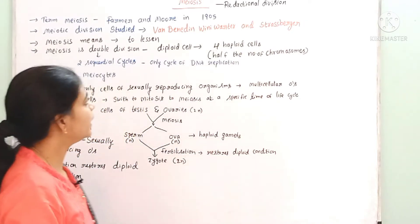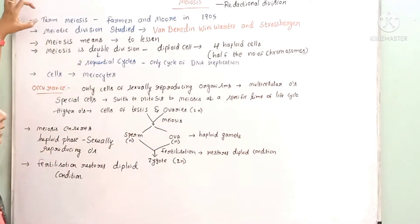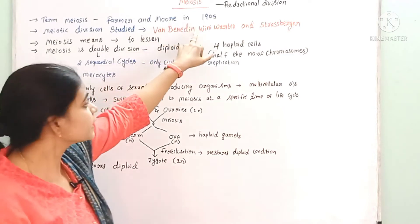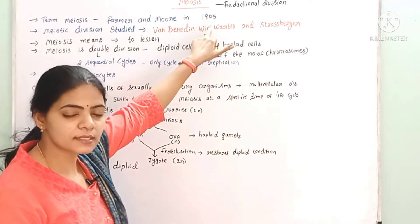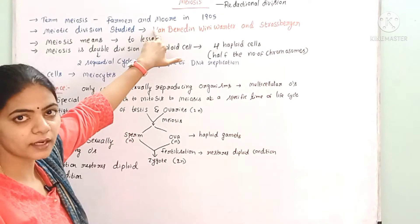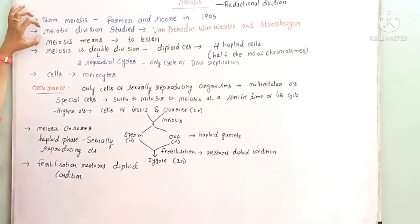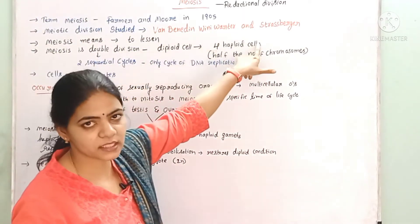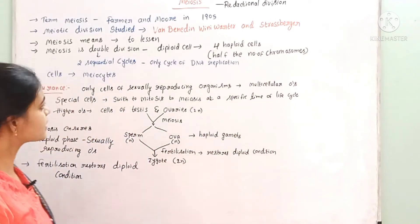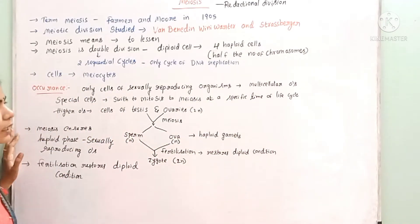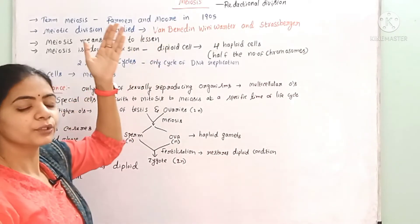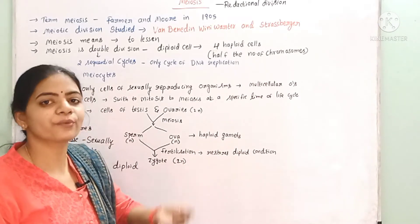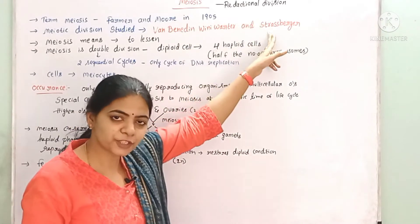In the introduction to meiosis, the term 'meiosis' was first coined by Farmer and Moore in 1905. The discoverers who first studied meiosis were Van Beneden, Winiwarter, and Strasburger. The word 'meiosis' means 'to lessen' or 'to reduce' or 'to decrease' — which is why we call it reductional division.